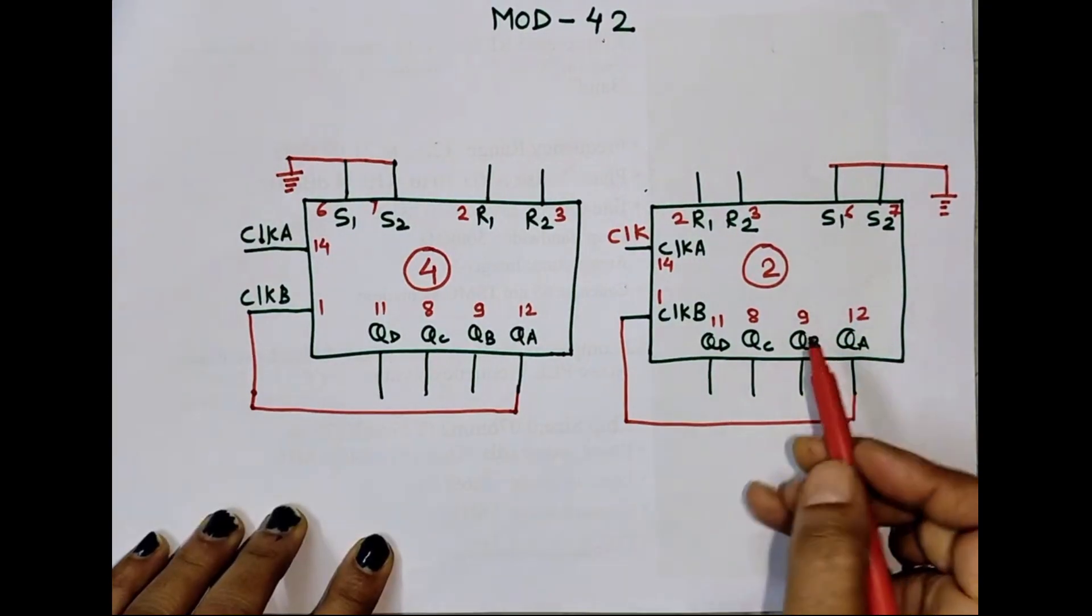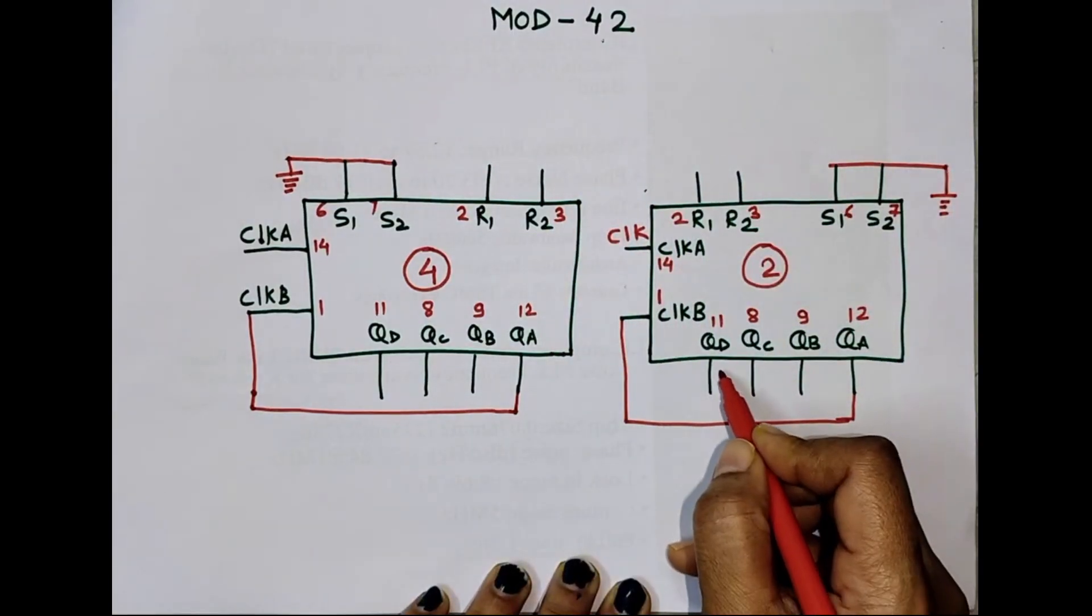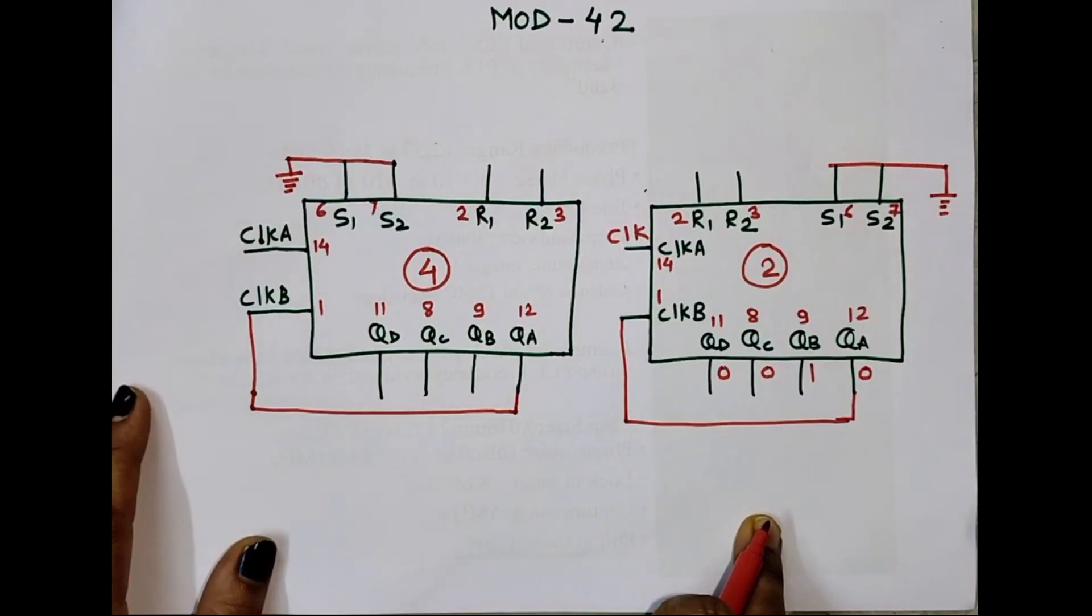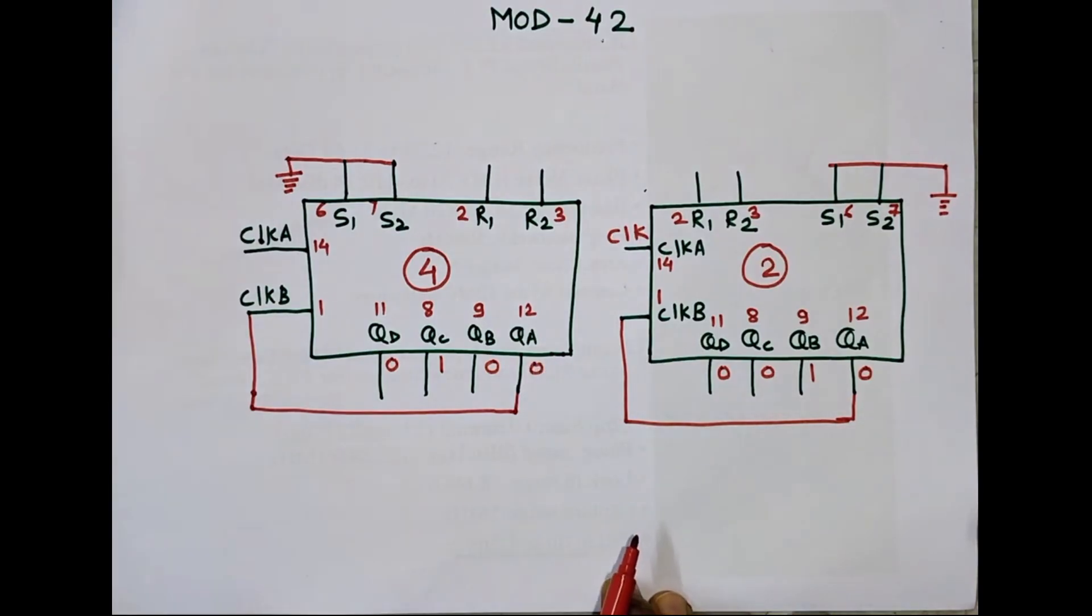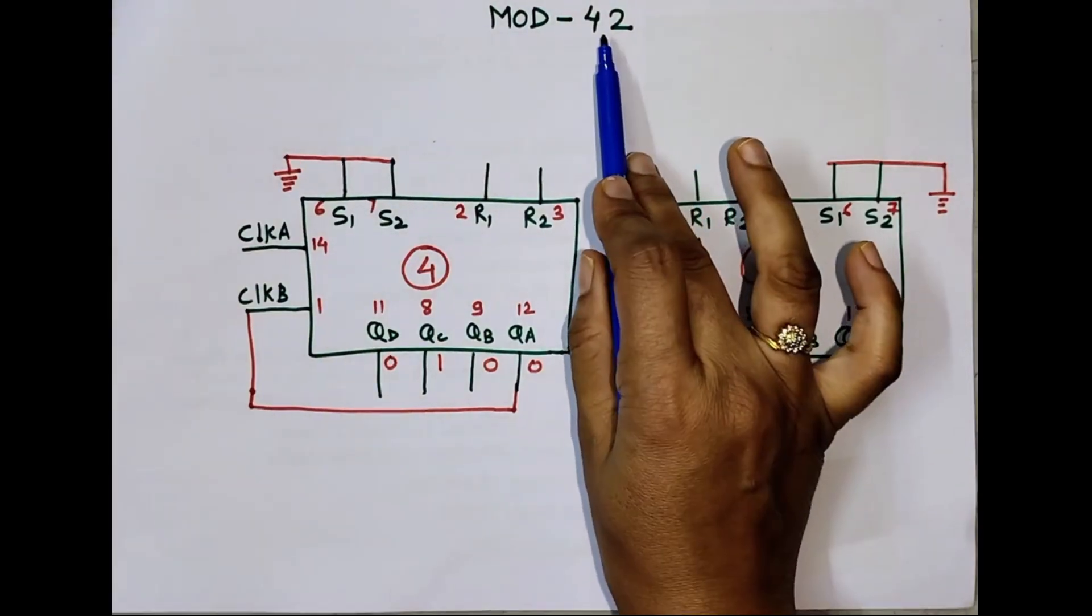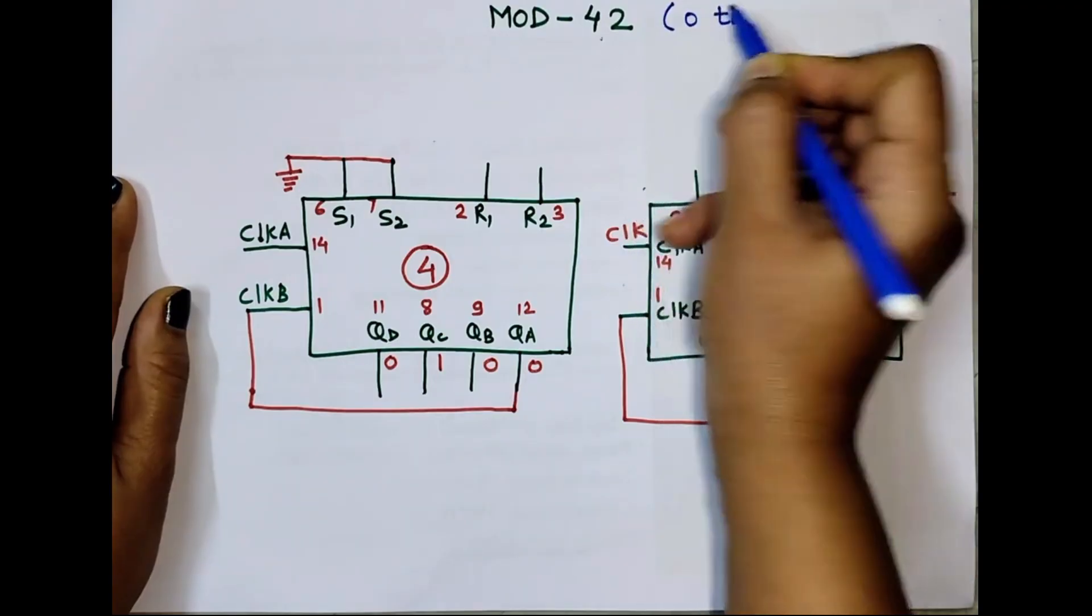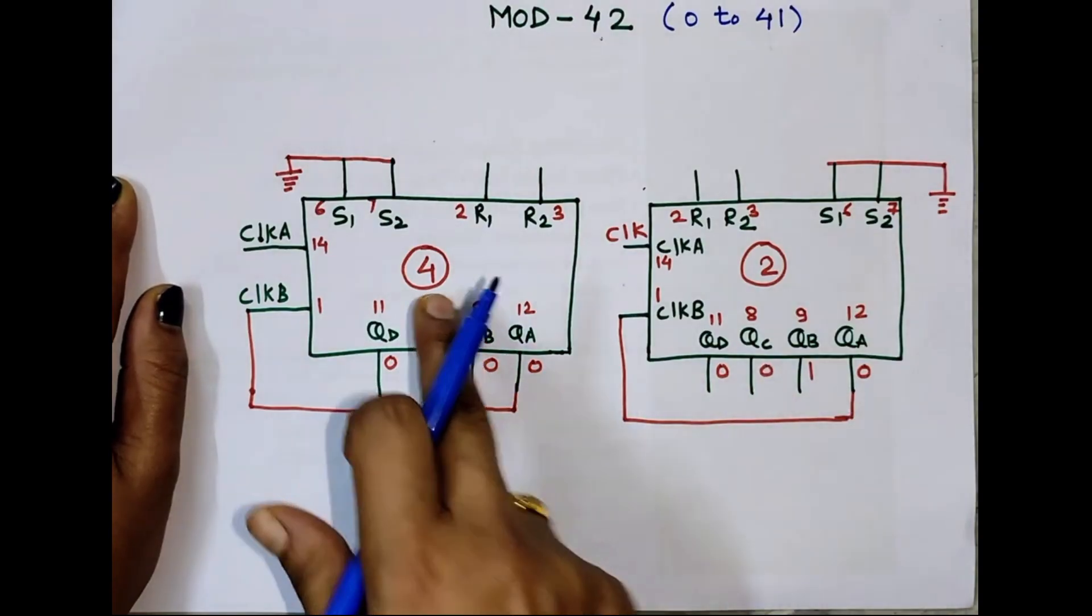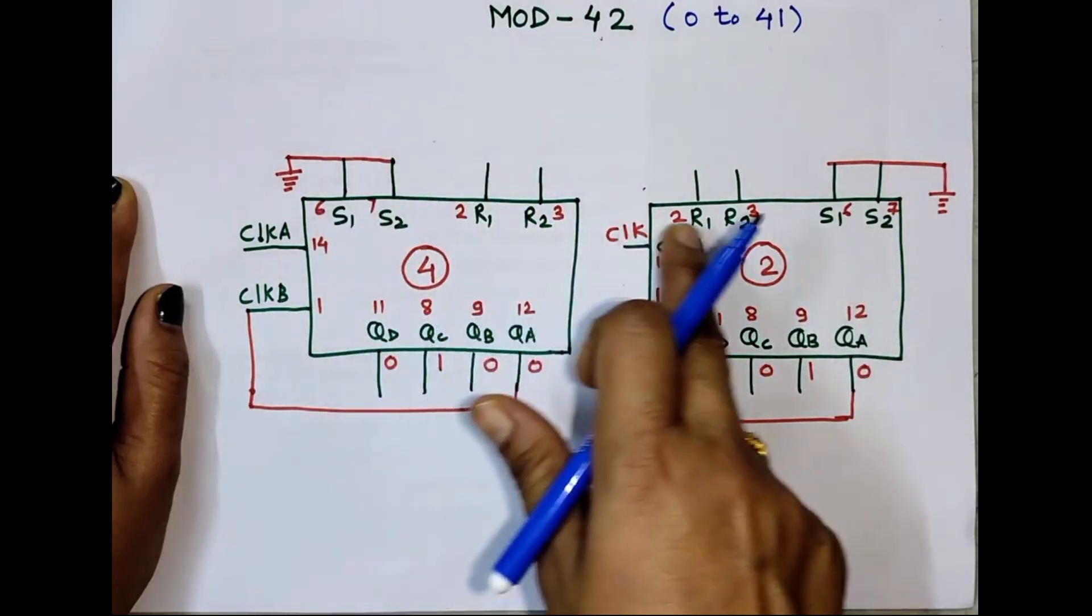Then binary equivalent of 2 is 0010 and binary equivalent of 4 is 0100. So this counter will count MOD-42, means it will count total 42 clock pulses. So count is from 0 to 41. So as soon as these numbers will become 4 and 2, our IC will reset. So reset pins must receive one.